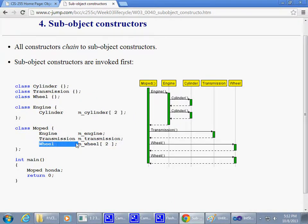What happens is that if we have some classes, and I use like a little moped with an engine and transmission and a wheel, and a wheel happens to be an array of two wheels right there. So it's like a little scooter type of device. So if separately class cylinder is defined, and class transmission is defined, and the wheel is defined somewhere else, and the engine is also defined,